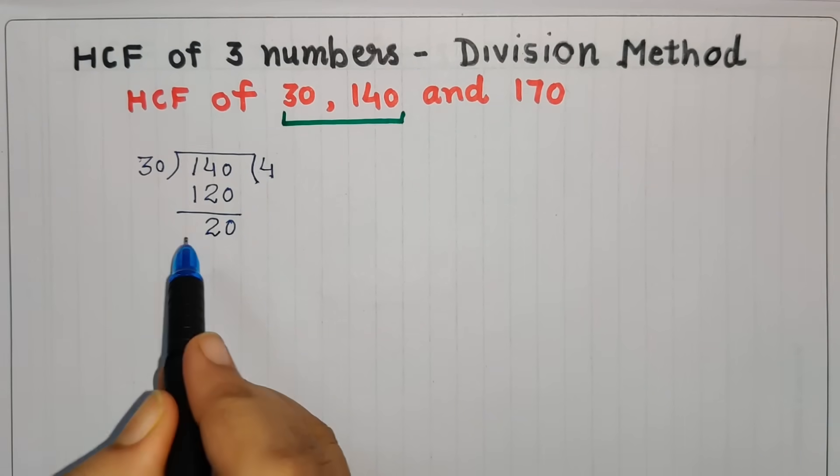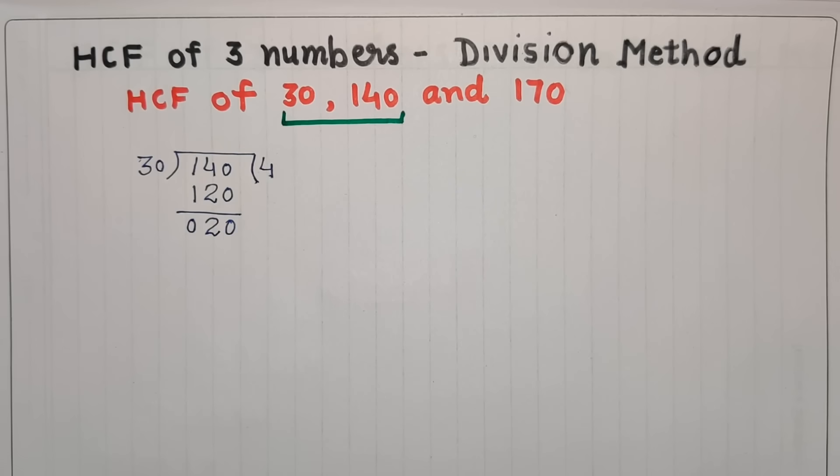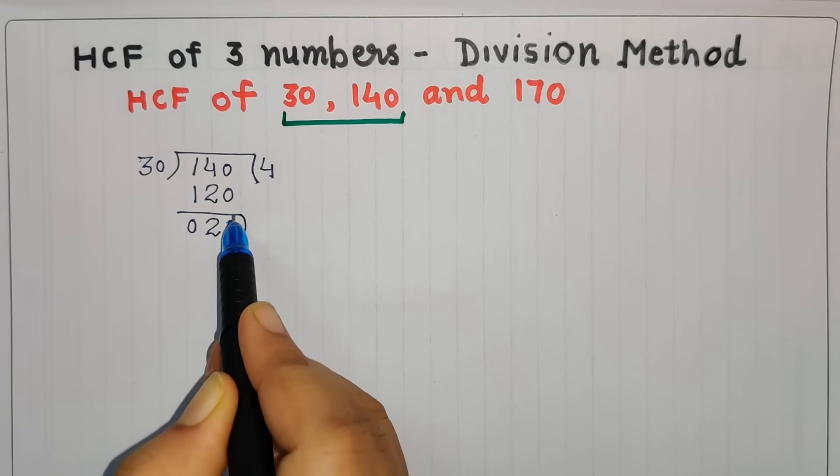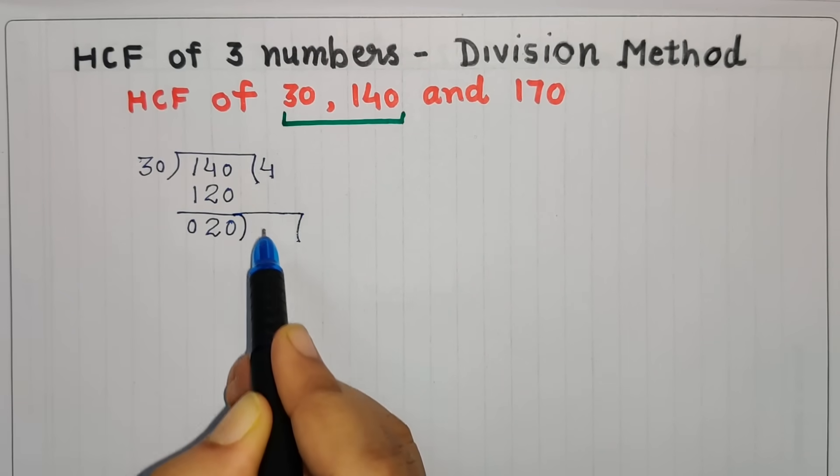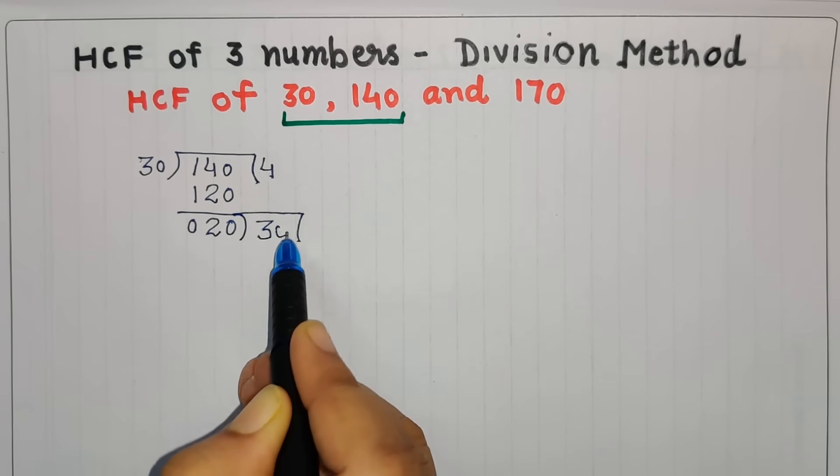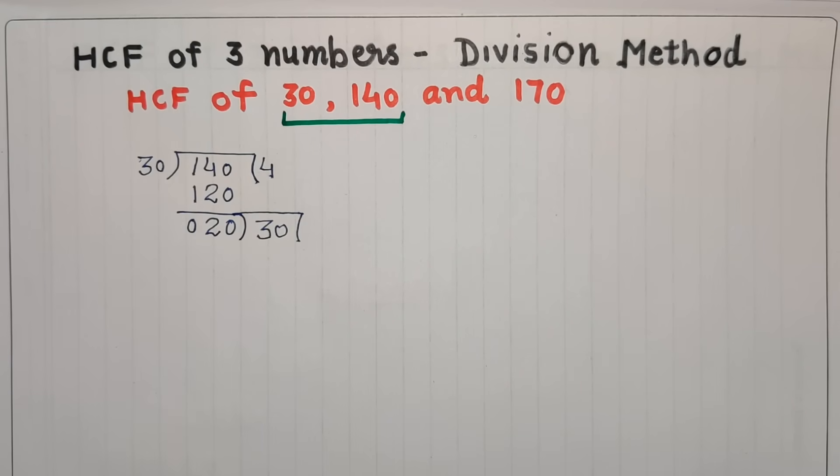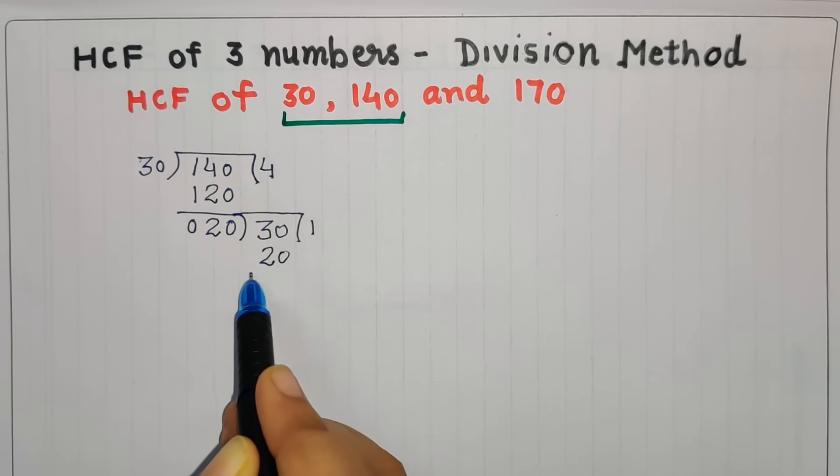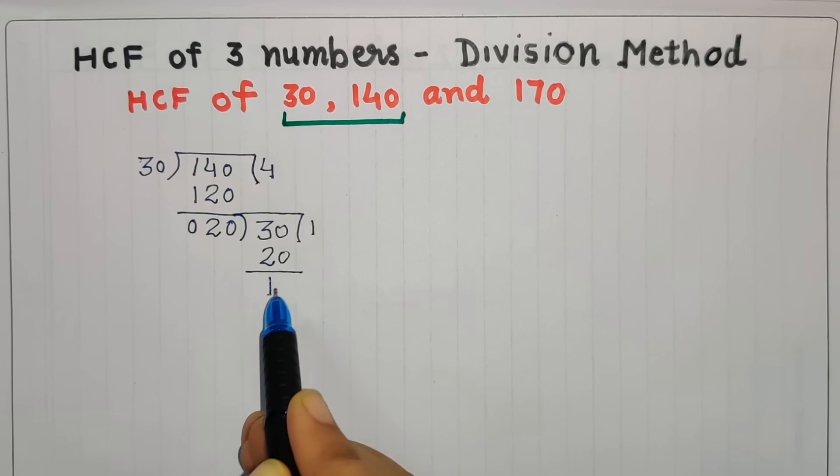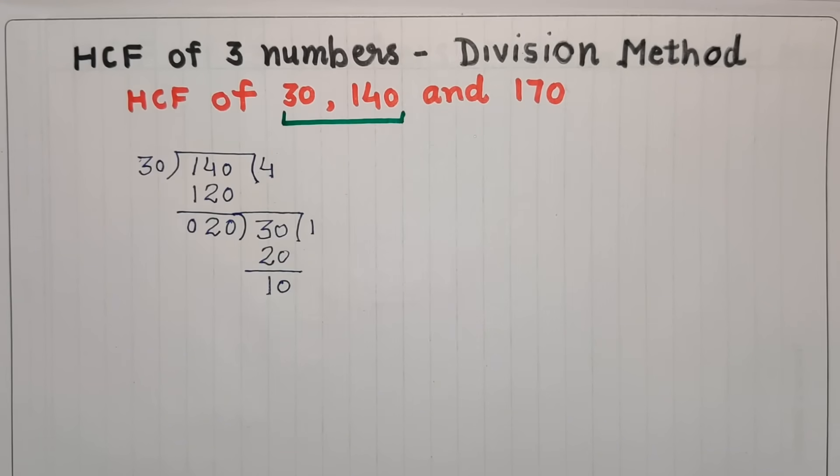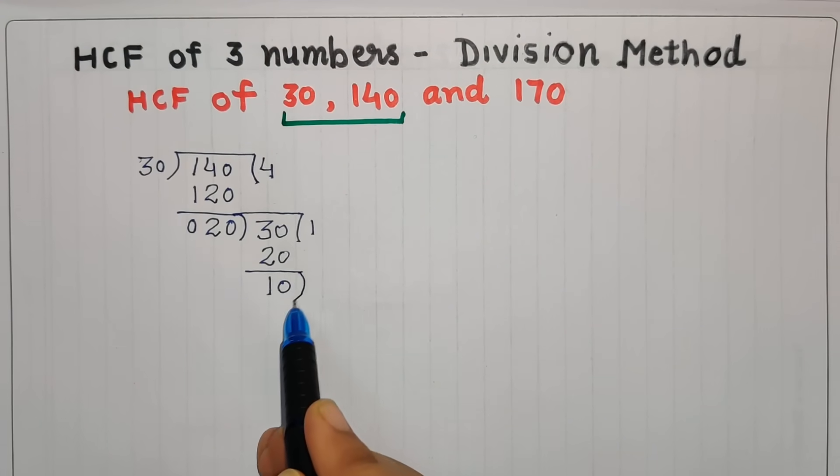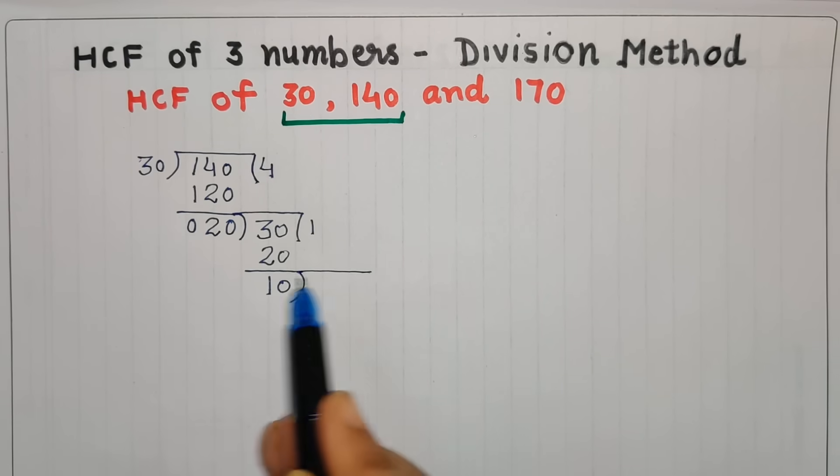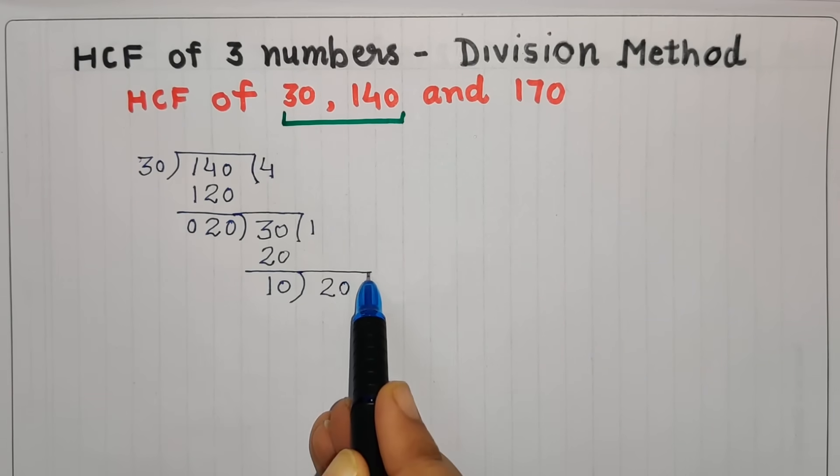As the remainder is not zero, the process will continue. 30, the old divisor, will become the new dividend, and our remainder 20 will become the new divisor. We will again divide it. Again the remainder is not zero, so the process will continue. The remainder will become the new divisor and the old divisor will become the new dividend.